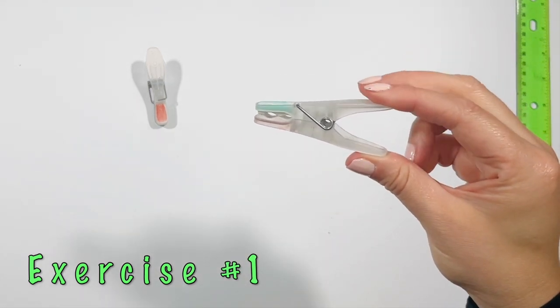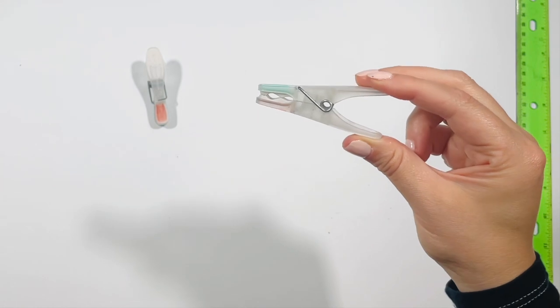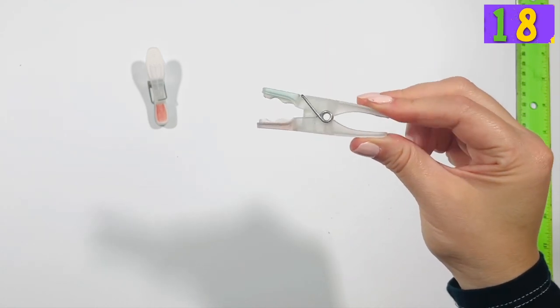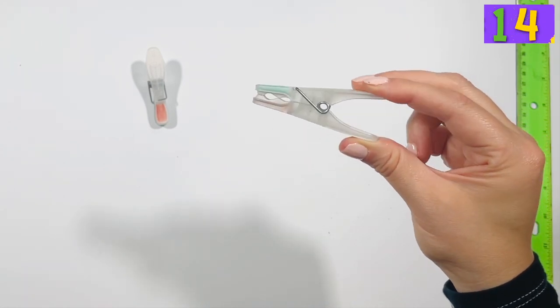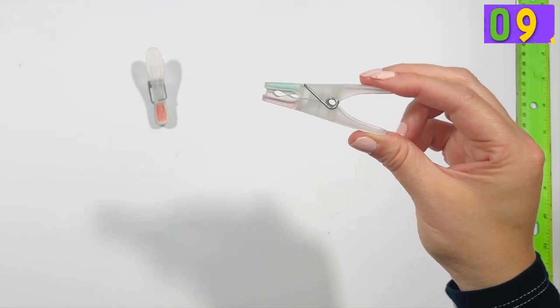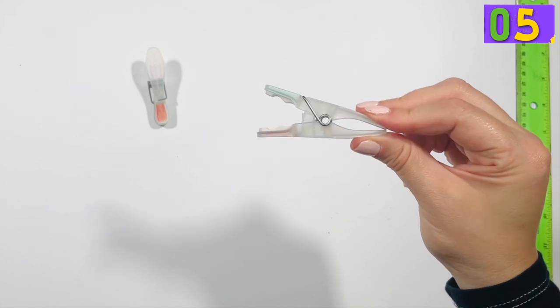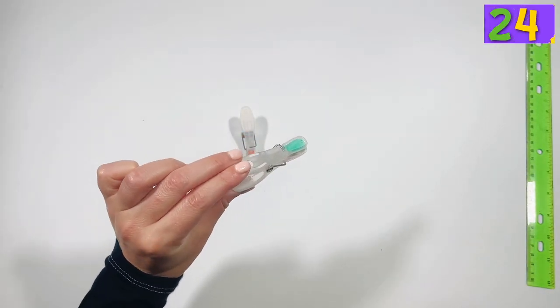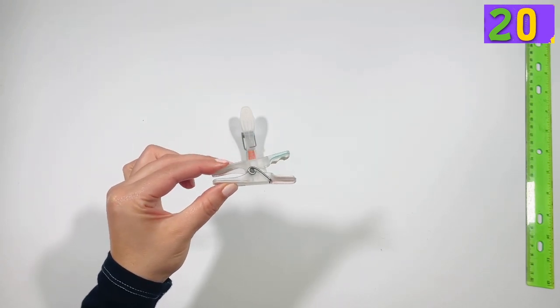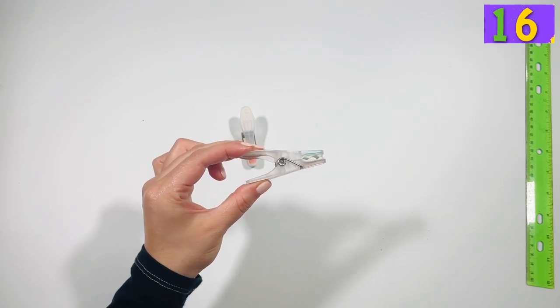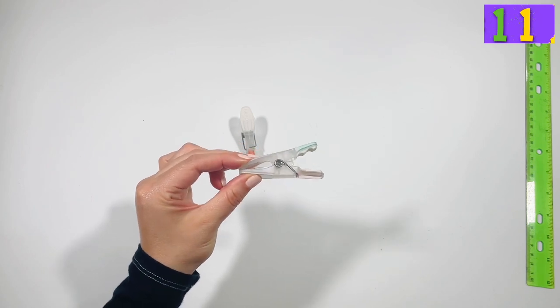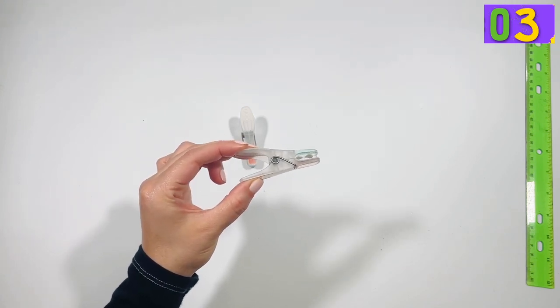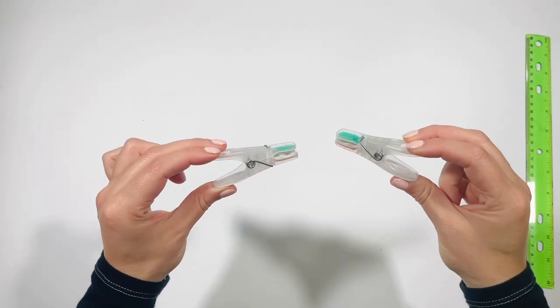Exercise number one. Use your right hand and squeeze the cloth pin for 25 seconds. Go! Now switch it to your left hand. You have 25 seconds. Can you try with both? Let's begin!